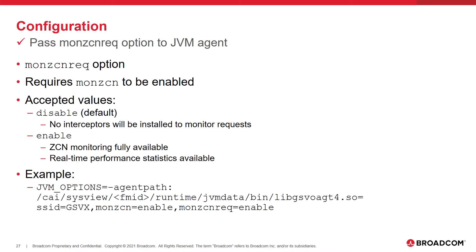Here's an example of a JVM options environment variable that contains a path to our agent and several options. The first option is the SSID option, which indicates the SysView SSID where the JVM data task is running. Next you can see the MON-ZCN and MON-ZCN-REC options.